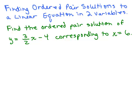We're continuing to work with linear equations in two variables. In this section we're going to start finding ordered pair solutions to a linear equation if I give you a value of either the x coordinate or the y coordinate.